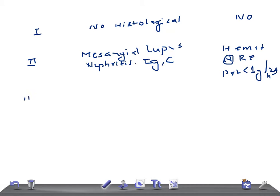Class three is Focal Segmental Lupus Glomerulonephritis. There will be mesangial deposits in all glomeruli and sub-endothelial deposits in some glomeruli.